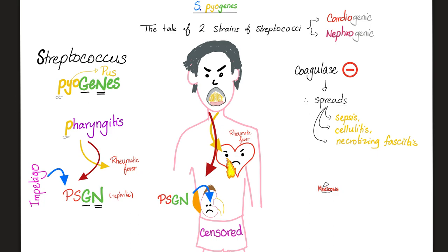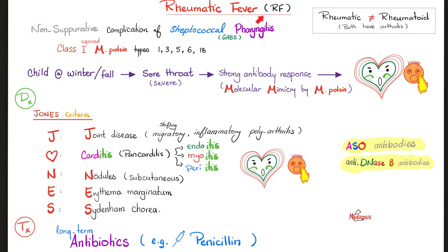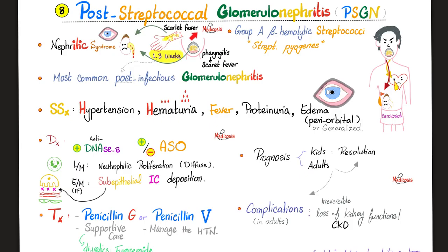You can call that cardiogenic or nephrogenic. For example, the one that causes pharyngitis is cardiogenic and nephrogenic; the one that causes skin infection is only nephrogenic. Please pause and review your Jones criteria. Rheumatic fever is caused by molecular mimicry of the M protein — your immune system was trying to attack the bacteria but ended up attacking your own heart because the two particles looked similar.